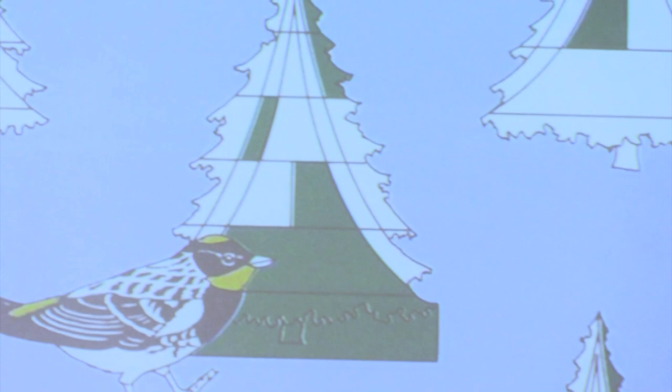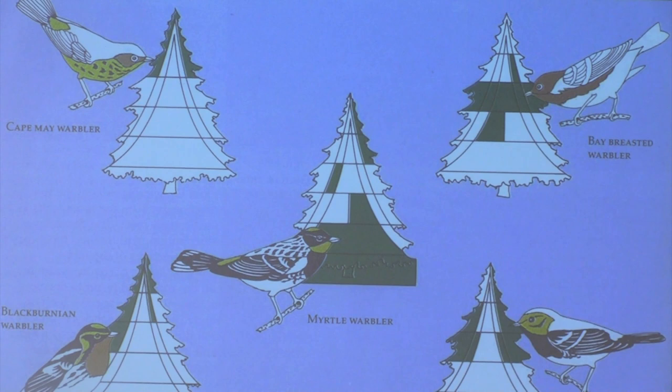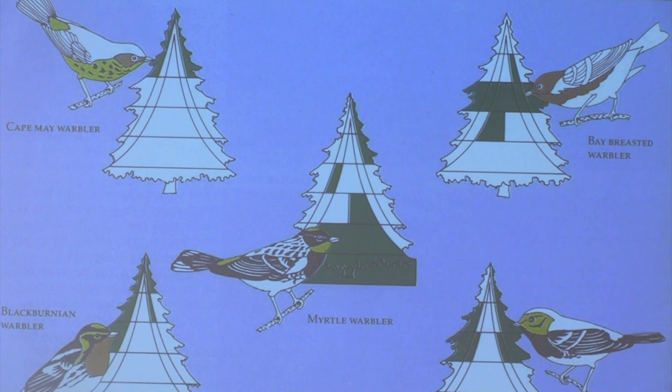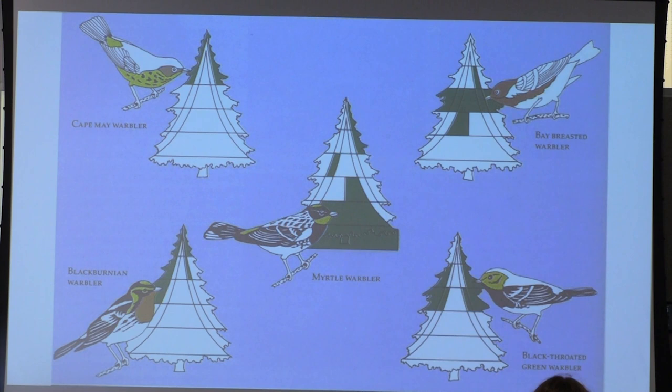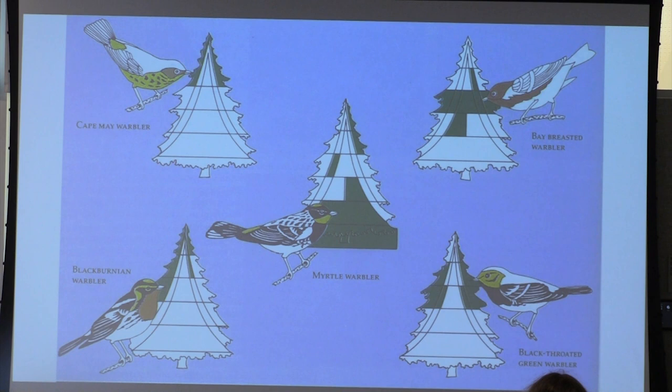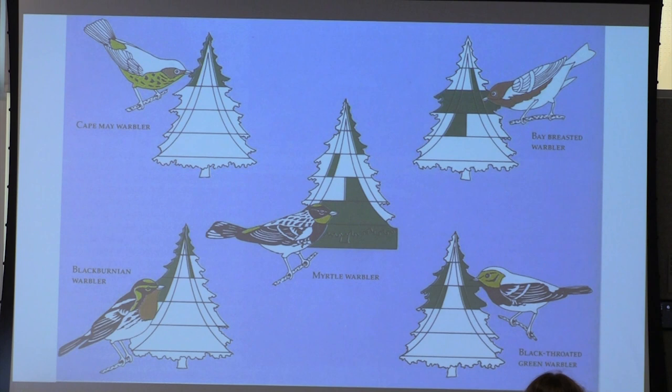MacArthur's warblers illustrate how all these different niches exist within a single tree. In old-growth forest with a lot of environmental complexity, the more complex an environment is, the more niches it has and the more diversity can exist. In this case, many available areas within a tree and the forest in general allow coexistence without competitive exclusion, just through resource partitioning. That's a really cool example of how environmental complexity drives bird diversity.